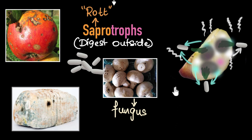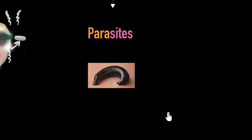And finally, what if you can't digest food at all, whether inside or outside? Then what? Then you become a parasite. Parasites hardly digest any food. Then how do they get their nutrients? Well, they depend on a host, meaning another living organism.